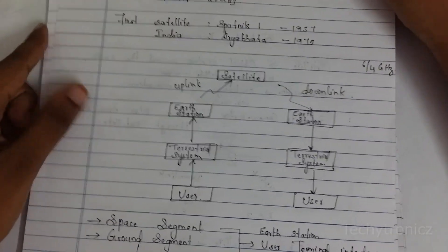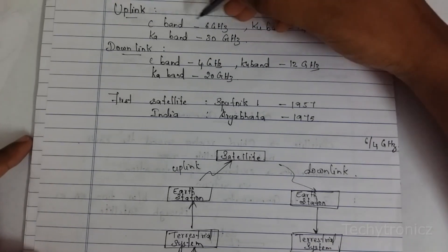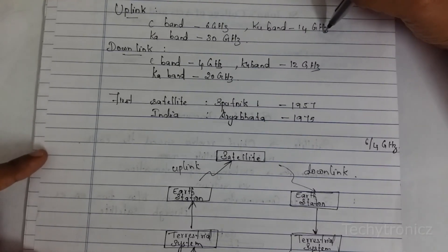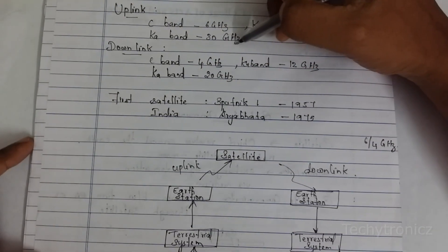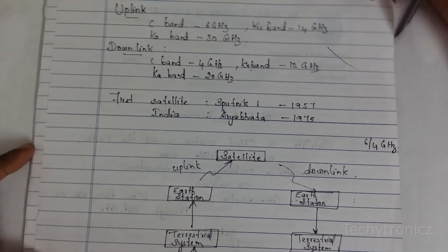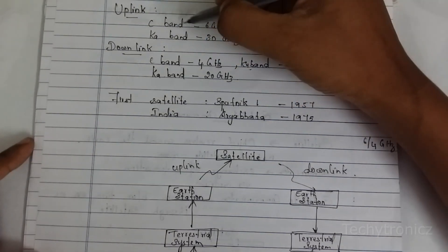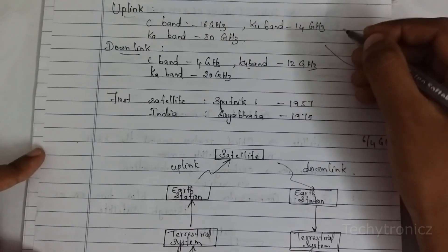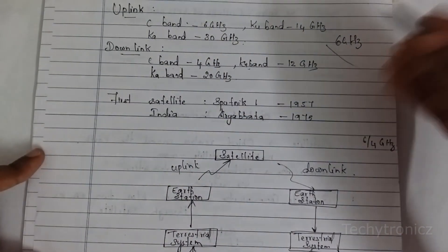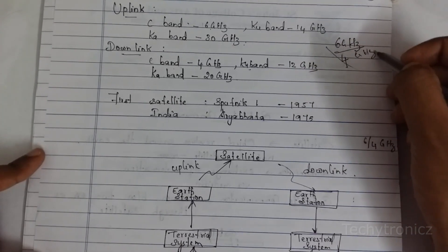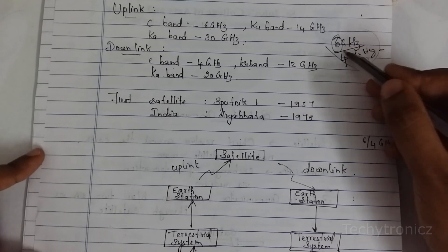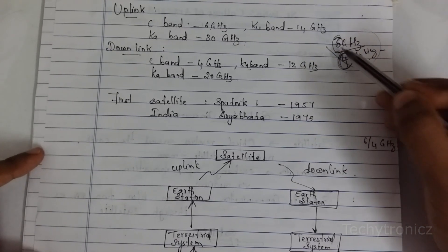For uplink bands, we are using different frequency bands. For C band, they are using 6 GHz. For Ku band, they are using 14 GHz. For K band, they are using 30 GHz. And for downlink frequency, for C band, Ku band, and K band, they are using different frequencies. For example, if they are using C band, the uplink frequency is 6 GHz and downlink is 4 GHz — that is 6/4 GHz. So 6 is the uplink frequency and 4 is the downlink frequency.